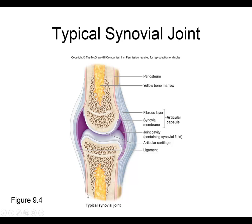Here is a typical synovial joint. The end of each bone is covered by articular cartilage resembling hyaline. Then we have the capsule, which has two layers: an outer fibrous layer of dense regular connective tissue, and an inner synovial membrane. The synovial membrane covers part of the bone and reflects onto the fibrous capsule, but it does not cover the cartilage. The cells of the synovial membrane secrete the synovial fluid, creating the joint cavity.